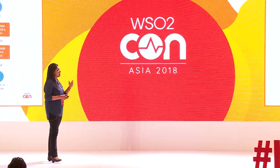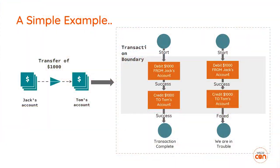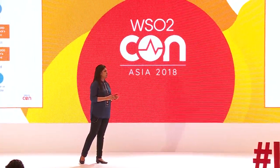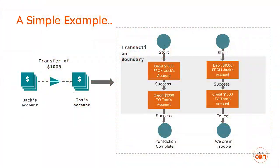Before moving into the session, I'd like to take you through a simple example. Jack is going to transfer a thousand dollars from his account to Tom's account. When Jack initiates the transaction, that amount will be debited from Jack's account with some database updates. If that step is successful, we credit that amount to Tom's account. If both steps are successful, the transaction is successful. If any step fails, we need to roll back the entire transaction.